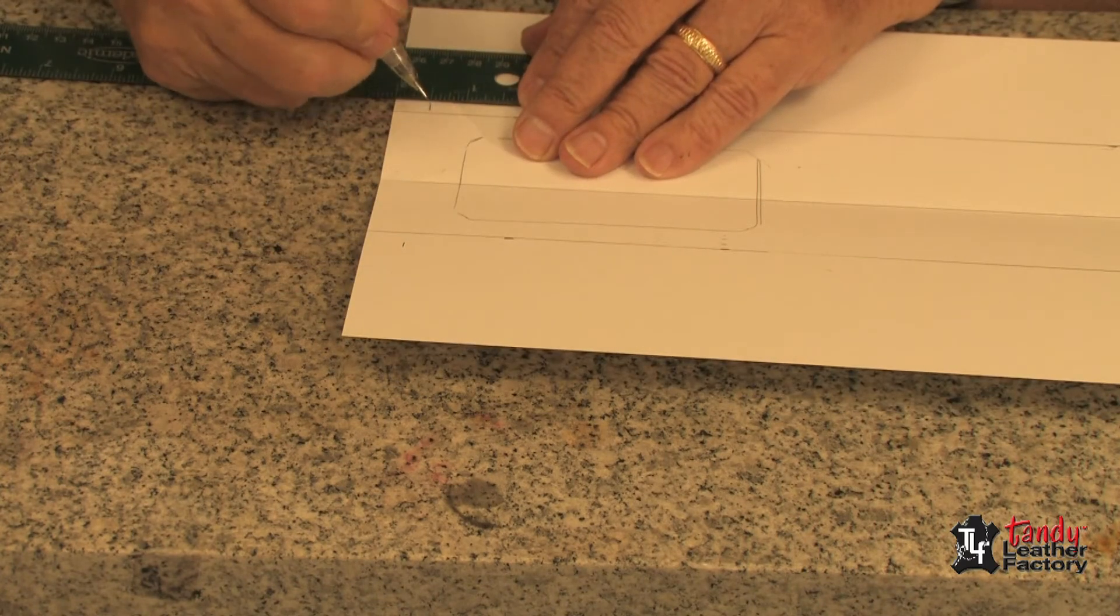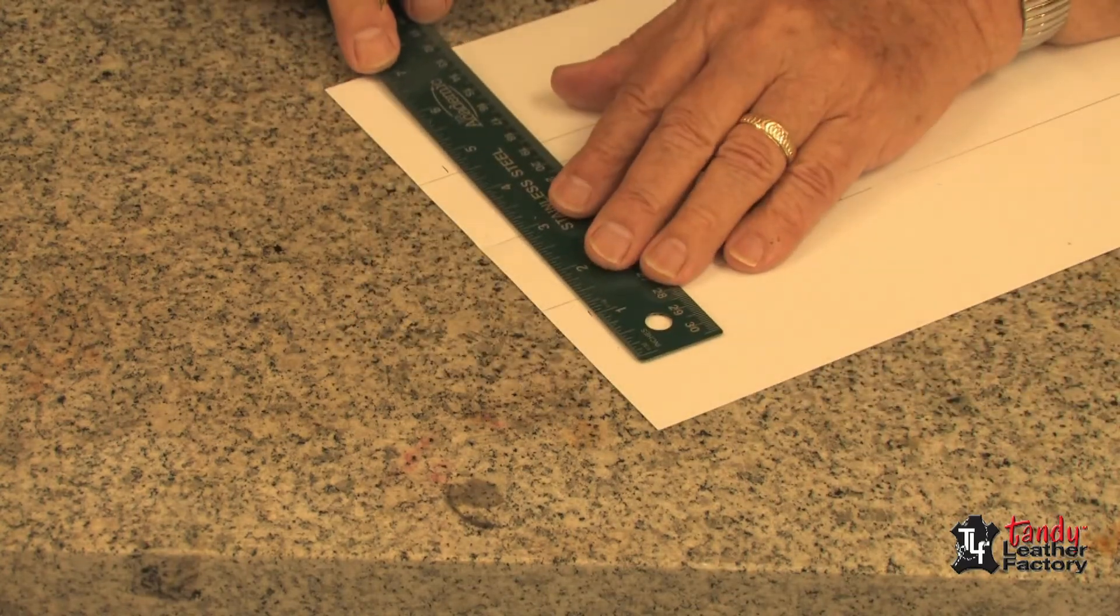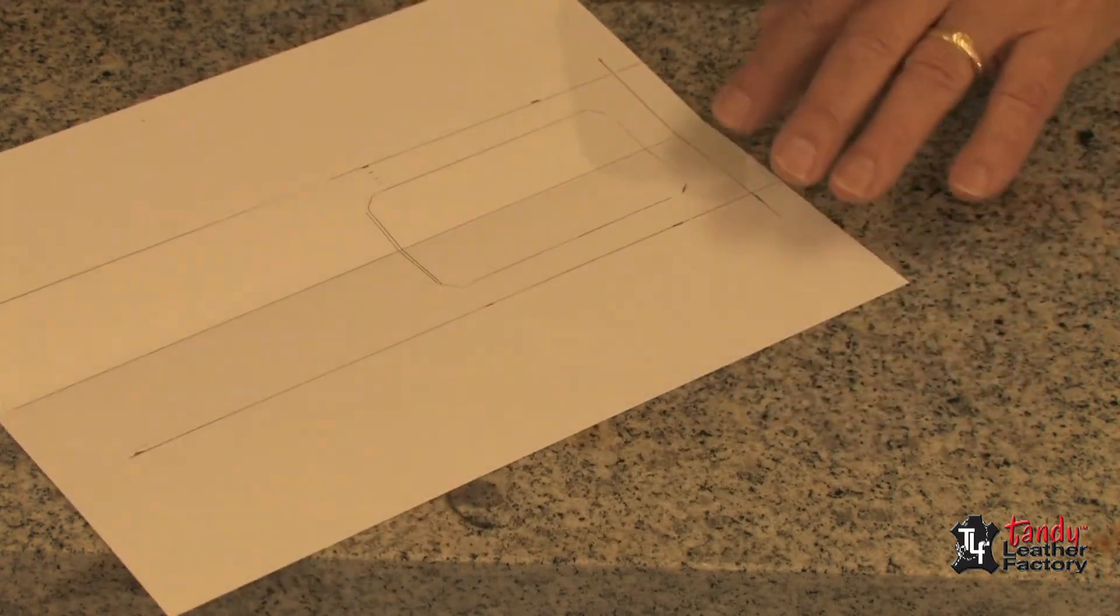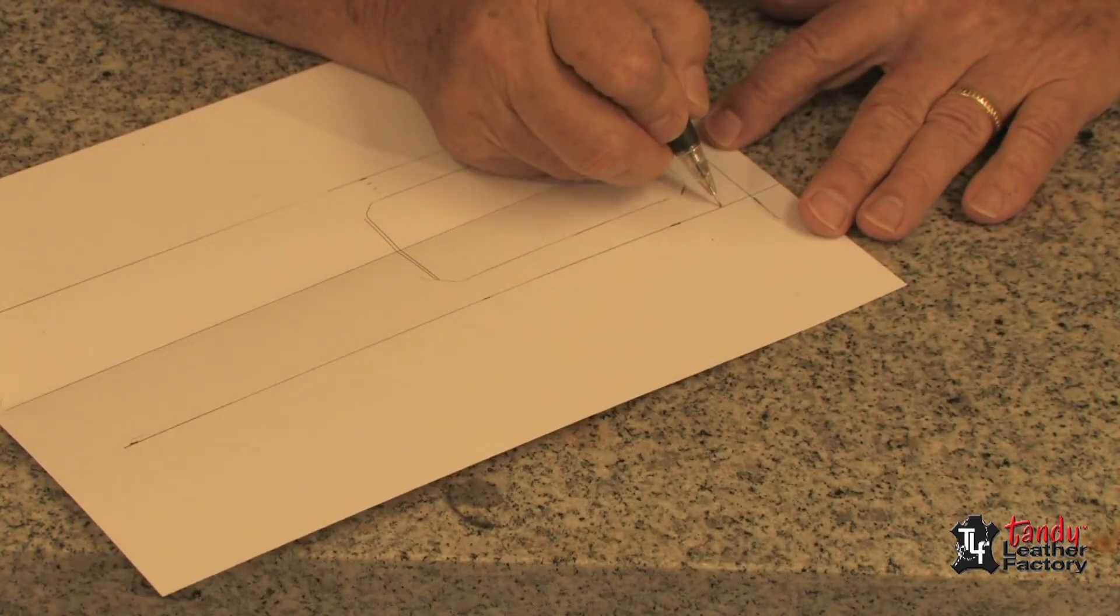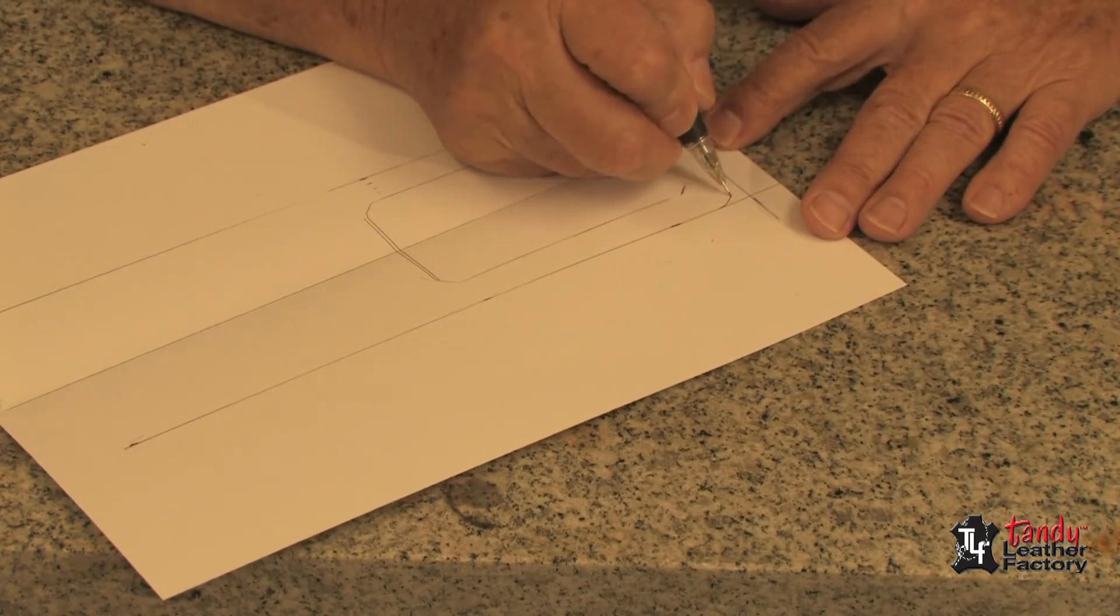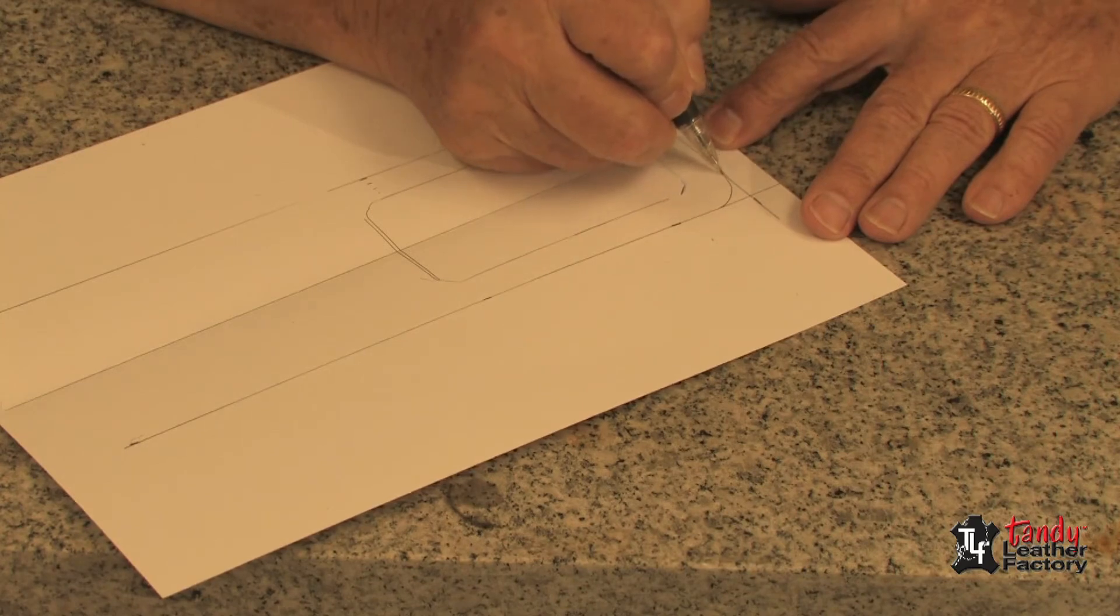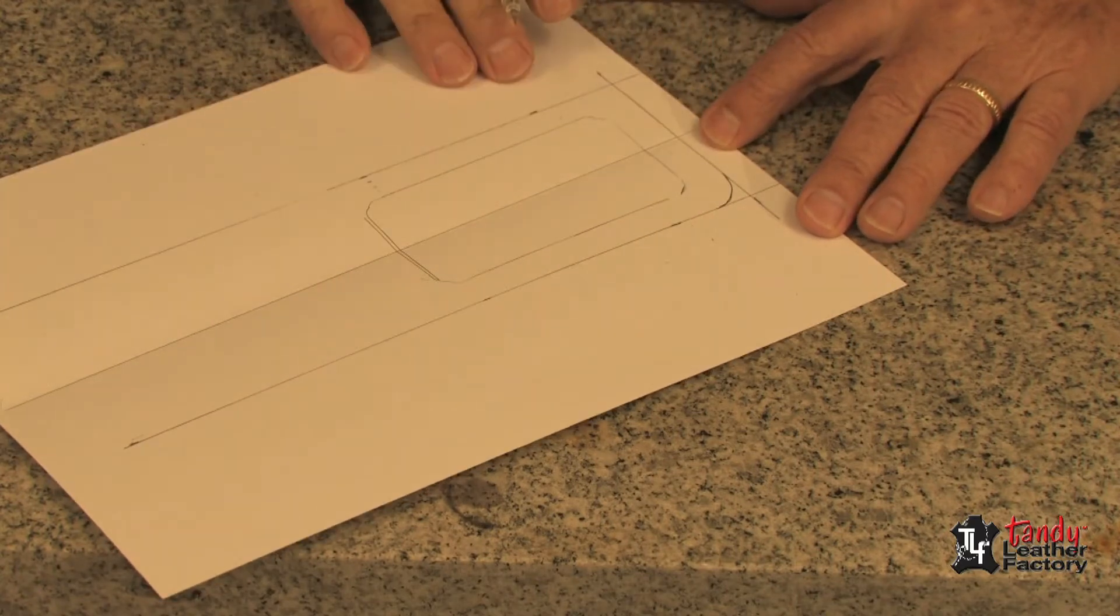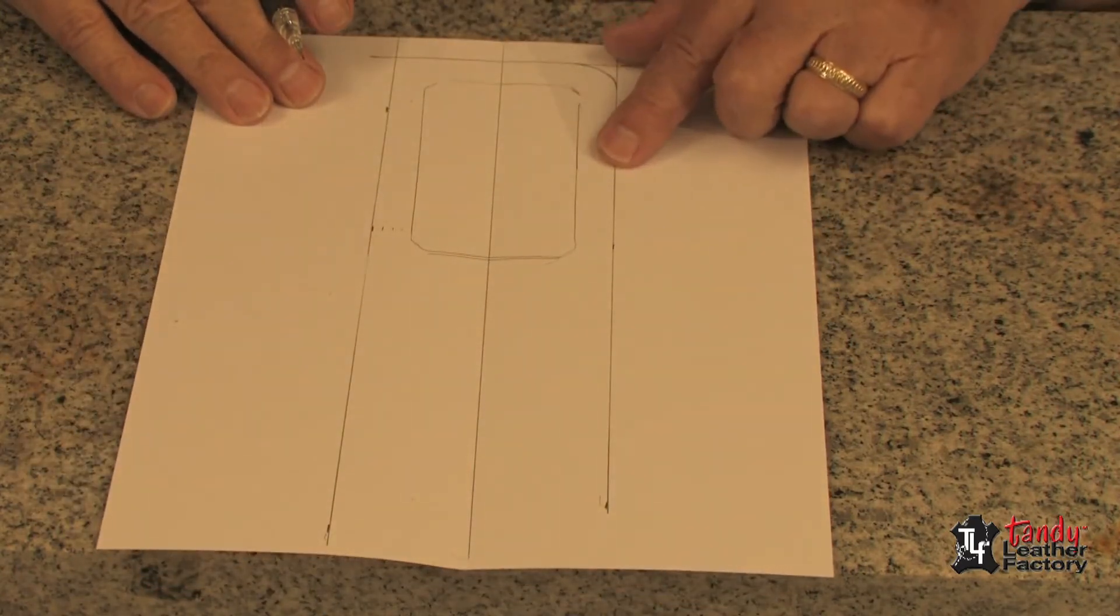We will draw a line across the bottom. Now at this time we will take our pencil and draw an arc at the bottom as you see me doing here. If you want, you can use a template of some kind to do that. Now we will only do that on one side.